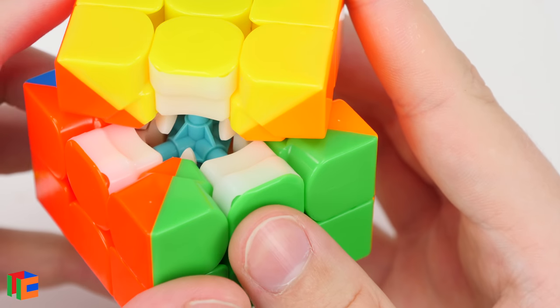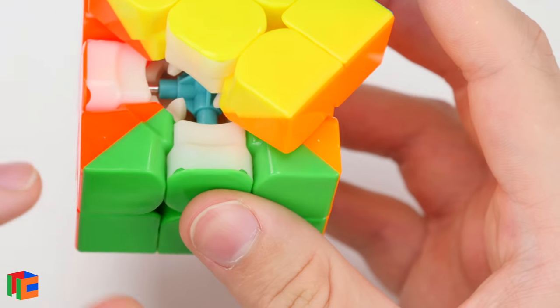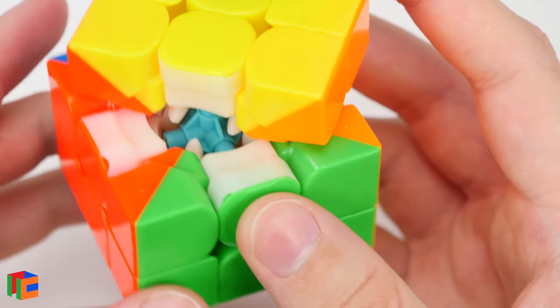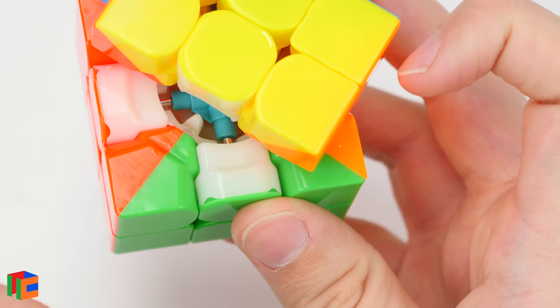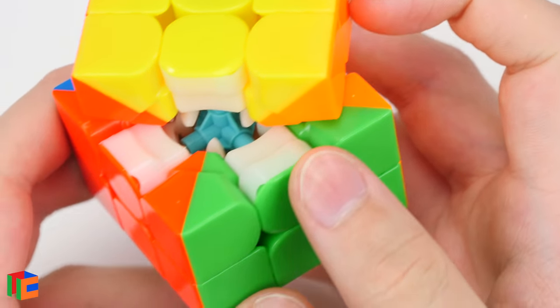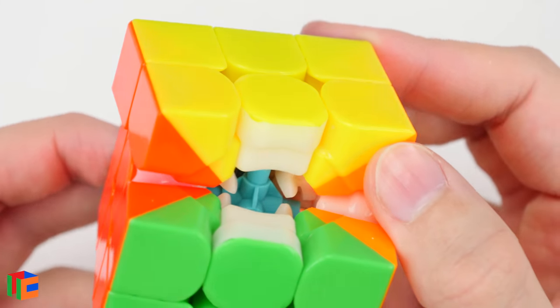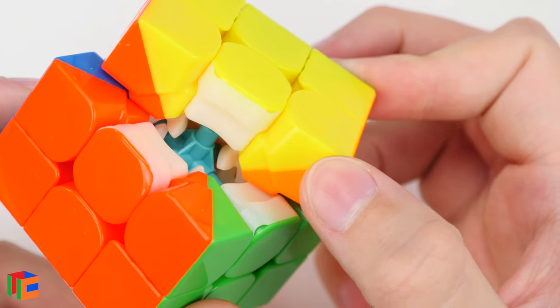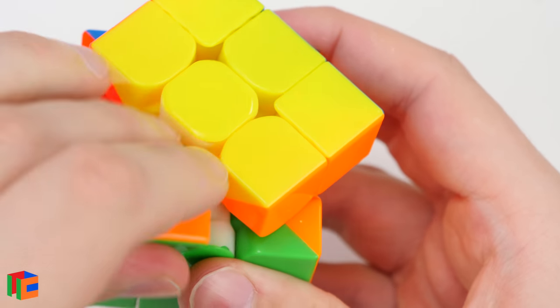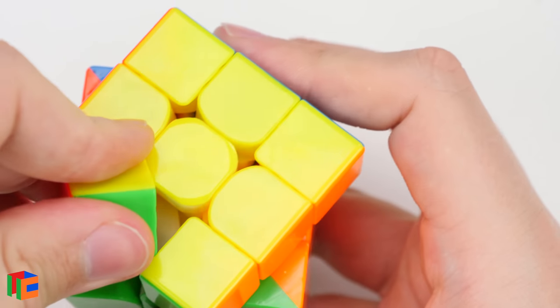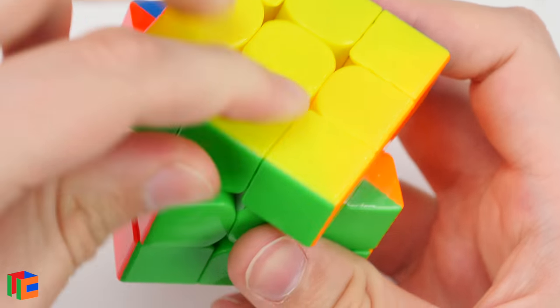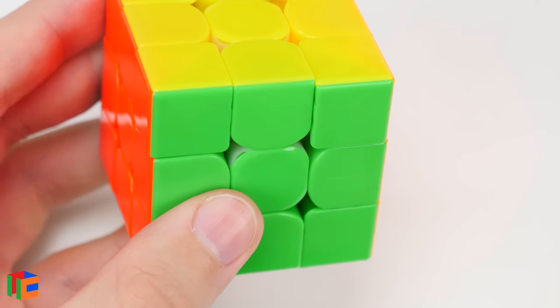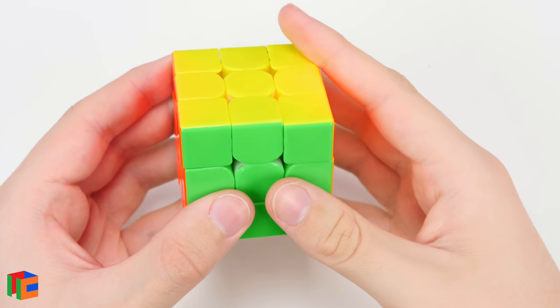I think that's probably what the ball bearings were meant to negate. A lot of times, cubes that have really small cores, they tend to feel a little bit blocky. Just because you're trying to move through a very confined space, I guess. The ball bearings just kind of help to equalize the weight and the force of the turn. The distribution of that force so that it doesn't all go into the core and kind of jam the pieces together. Which I think causes a lot of lockups with cubes with small cores.